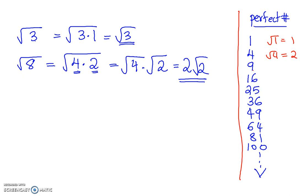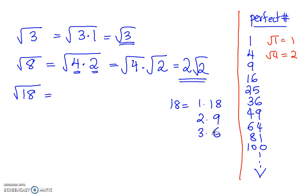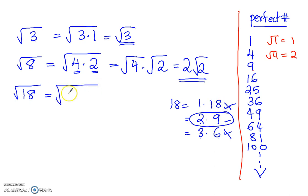Another example: let's say radical 18. Now 18 — how can I factor 18? I can write 18 as 1 times 18, 2 times 9, or 3 times 6. Of these three, I have to pick the one that has a perfect number in it. 6 is not perfect, 3 is not perfect, so I cannot pick 3 times 6. But 9 is a perfect number, so I write 18 as 9 times 2. Square root of 9 is 3, and 2 stays in the radical, so radical 18 simplifies to 3 radical 2.